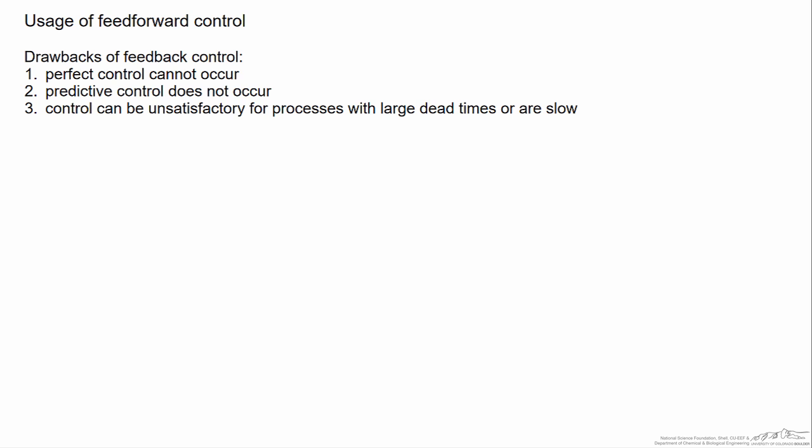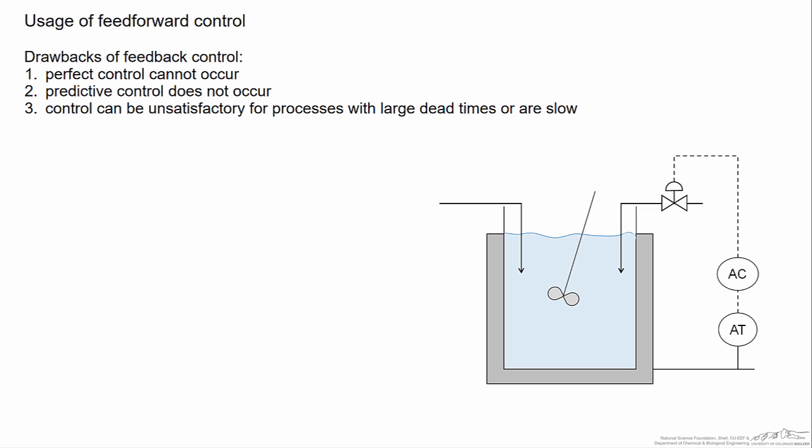To represent this we are going to look at a somewhat rudimentary example of a blending tank. In our blending tank we are trying to control the output concentration, and we have two streams. An example of a feedback only scheme would be one where we would try to directly control the composition coming out by the flow rate of the first one.